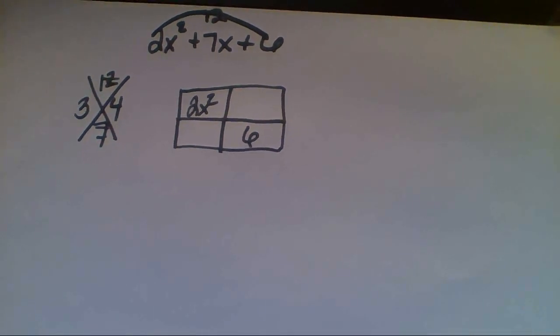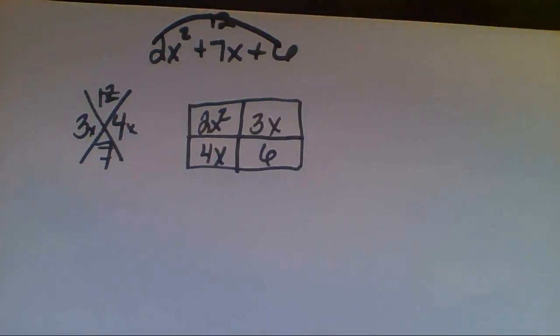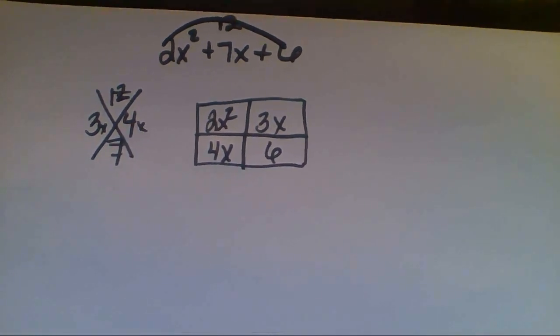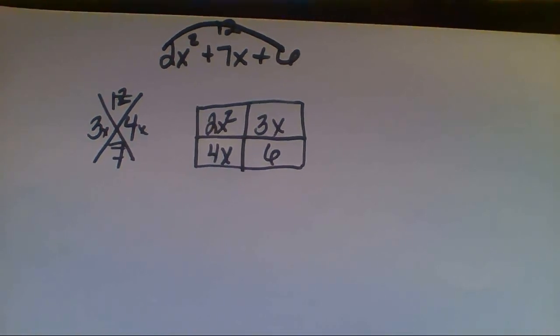The 3 and the 4 tells us how to split the 7x. So the 7x splits into 3x and 4x. The next step is to factor out the box.